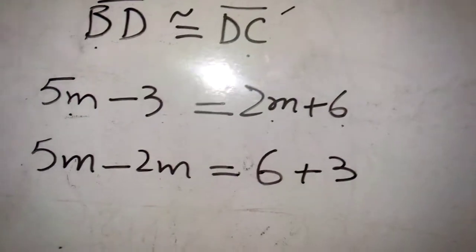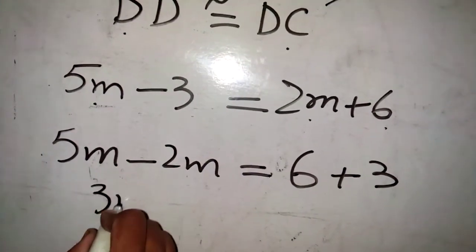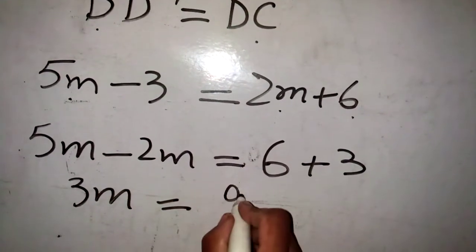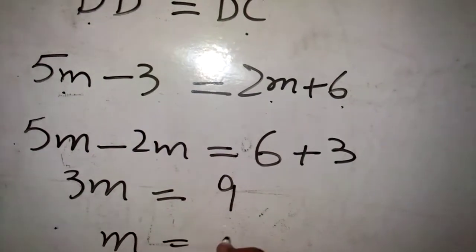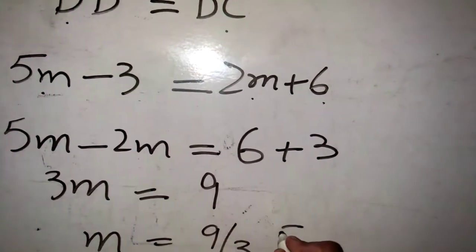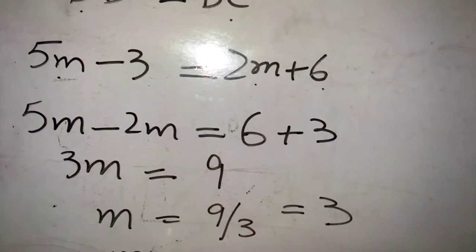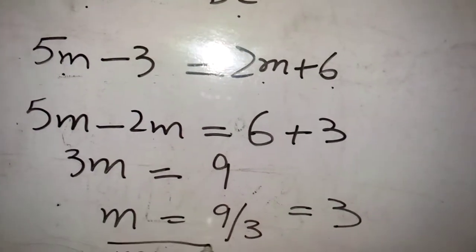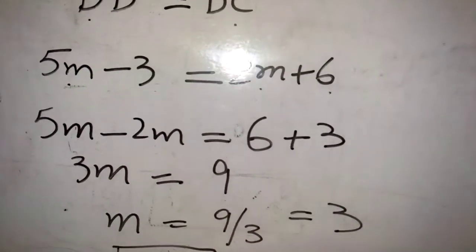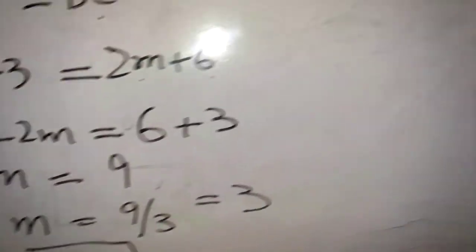Now 3m equals 9, and m will equal 9 divided by 3, which equals 3. So the value of unknown m is 3. The first unknown value is 3.